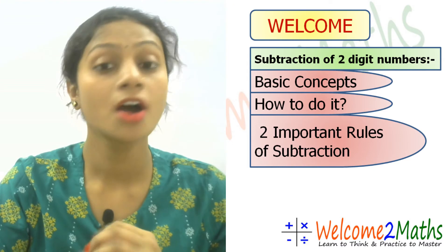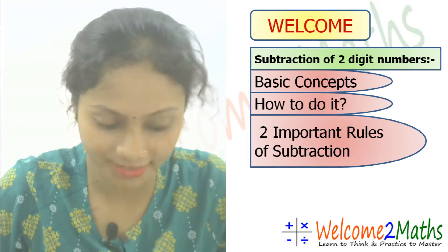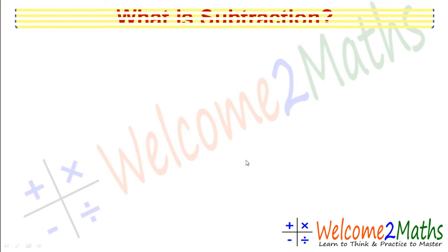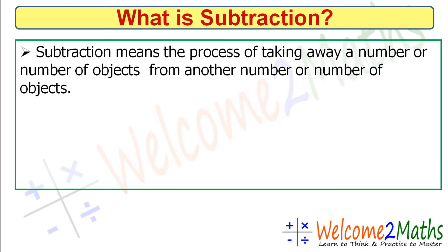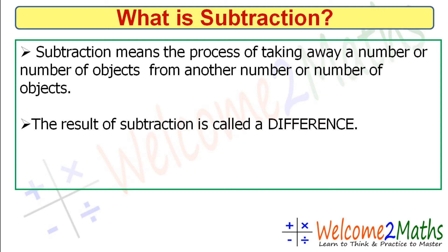So let's start. Subtraction means the process of taking away a number or number of objects from another number or number of objects. When we are taking away a number from another number, it's called subtraction. The result of subtraction is called the difference.